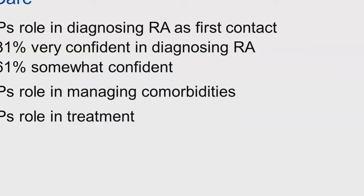Primary care providers have a critical role in diagnosing RA. Survey data shows that 31% are very confident in diagnosing rheumatoid arthritis, but 61% are only somewhat confident. The goal of this talk and this course is to increase that confidence. We must also recognize the important role of primary care in managing comorbidities, which are very common in rheumatoid arthritis patients.